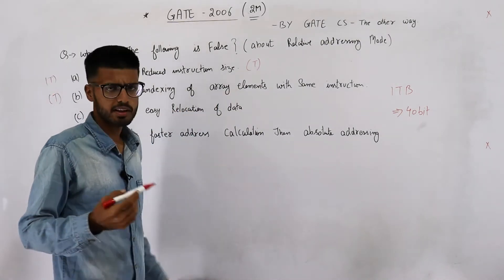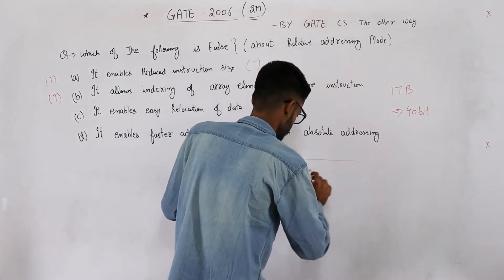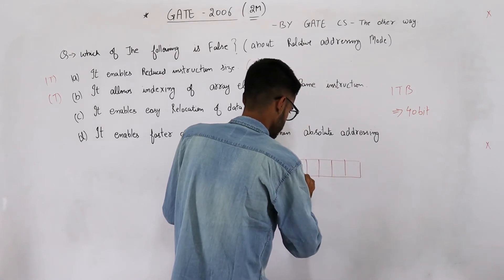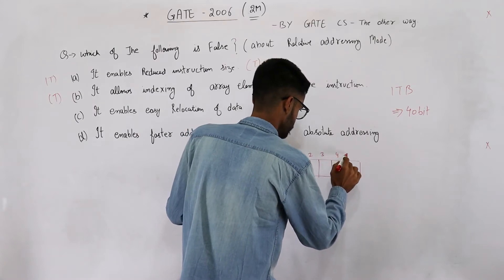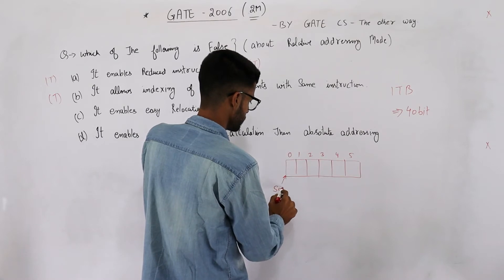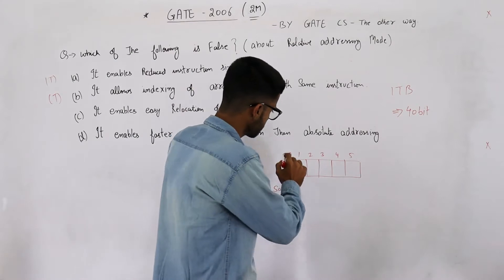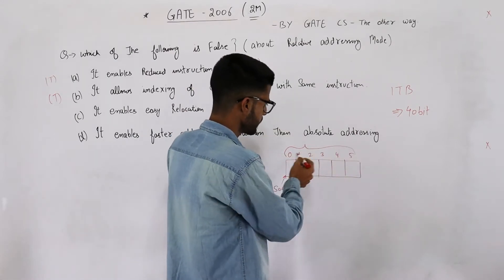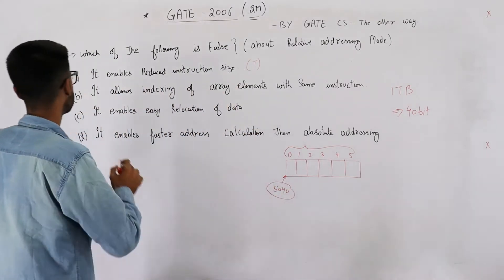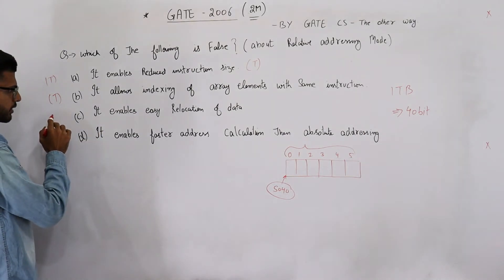The offset can be relative to the base address. Say this is your array. Whatever the base address, example 5040, whatever. These are the relative addresses. All these indexes are relative addresses relative to this base position, so we can use this also. So B part is true. Let's see C part.